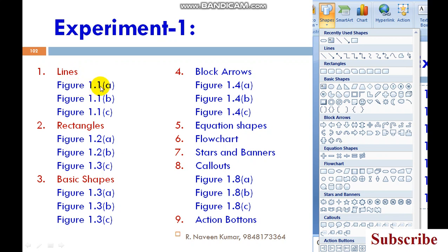It is 1.1. One is the chapter or experiment number, one is the serial number, one is the subheading. This is the subheading 1.1. This is the figure name ABCD. 1.1 means first chapter, first experiment, first heading, under that A is the figure number ABCD. You follow ABCD for this group.